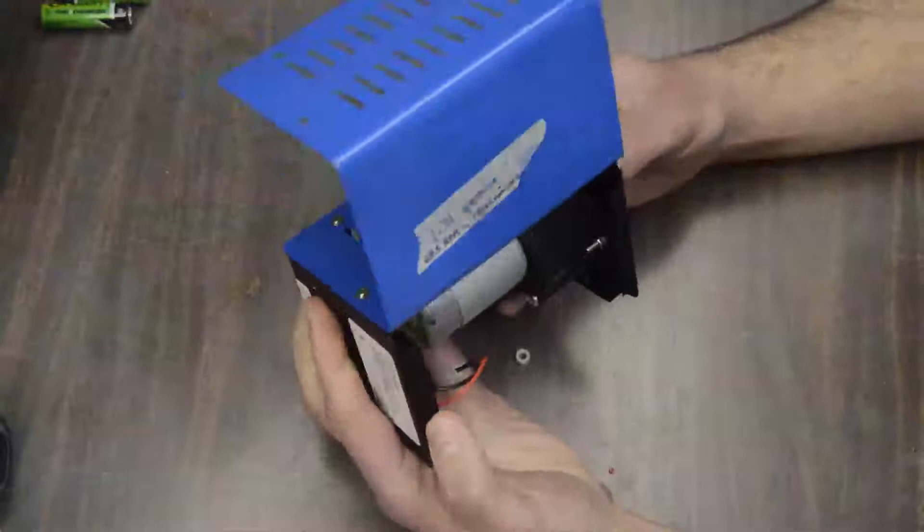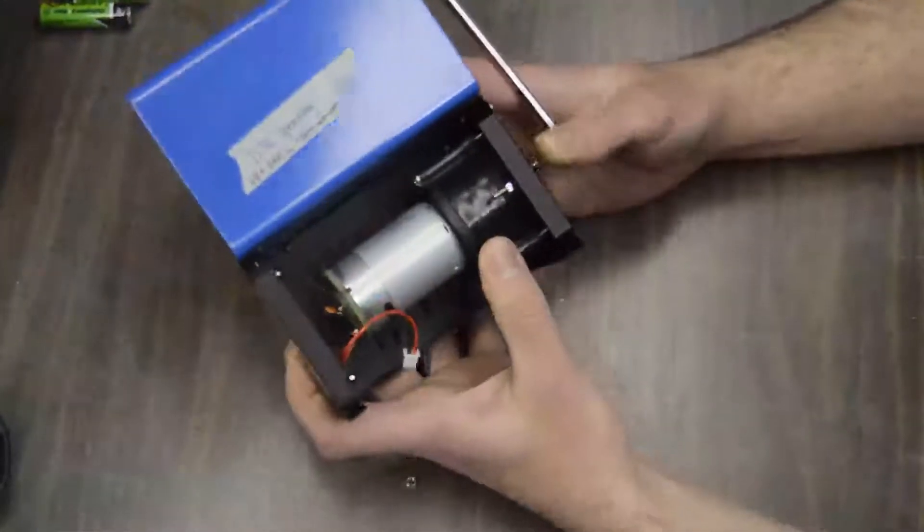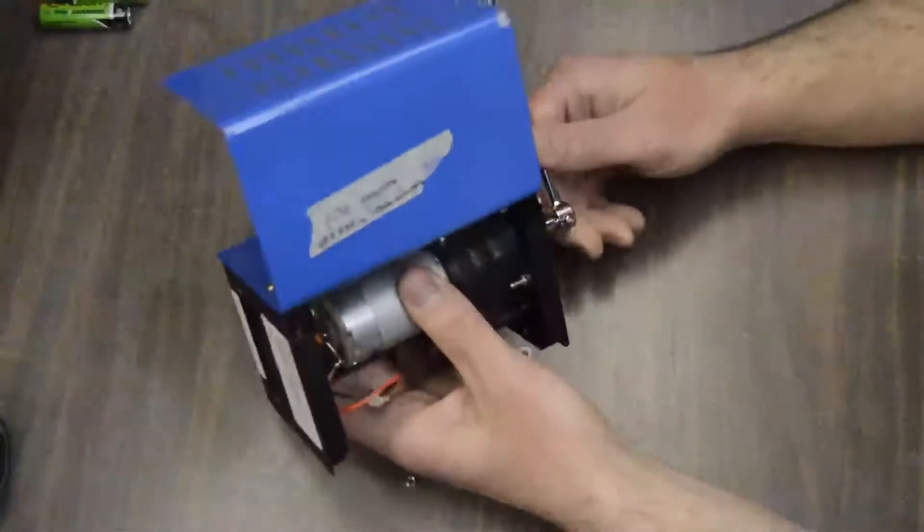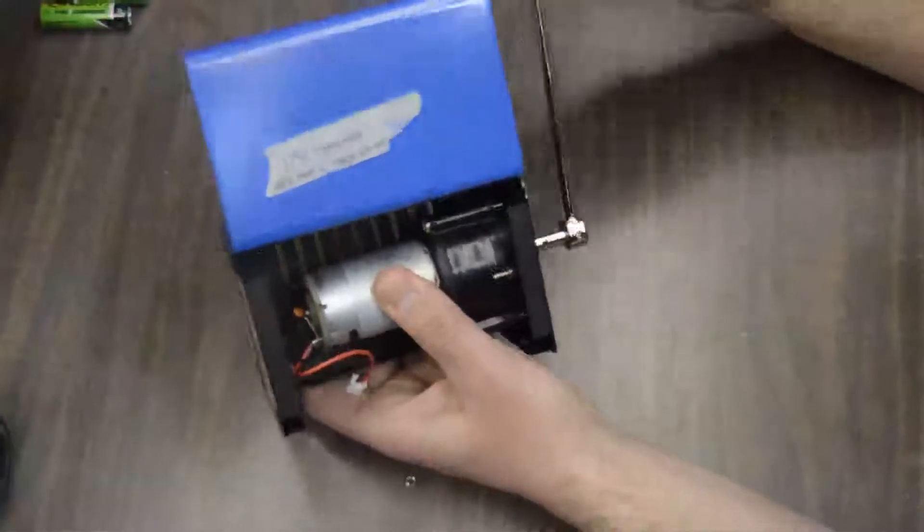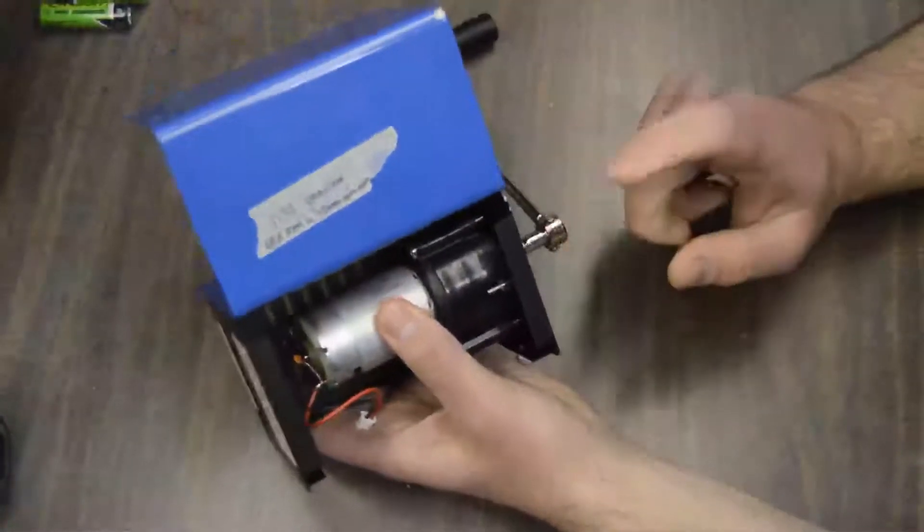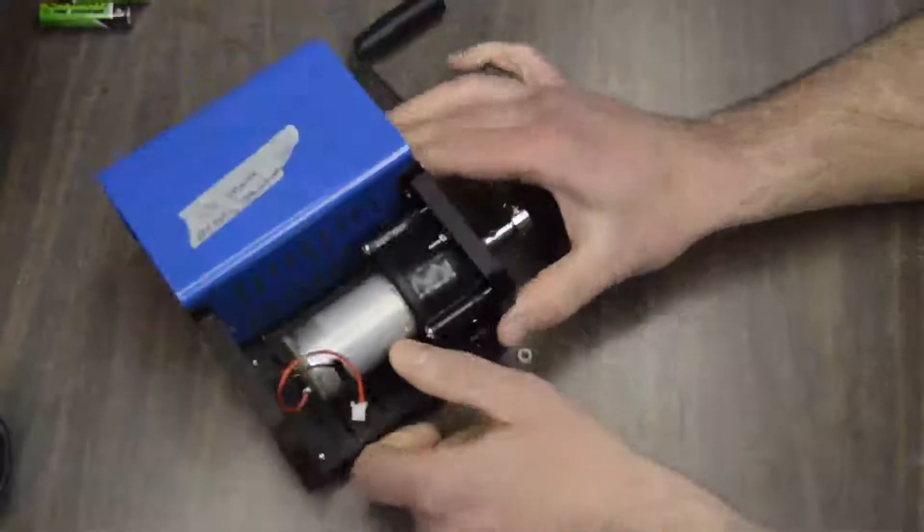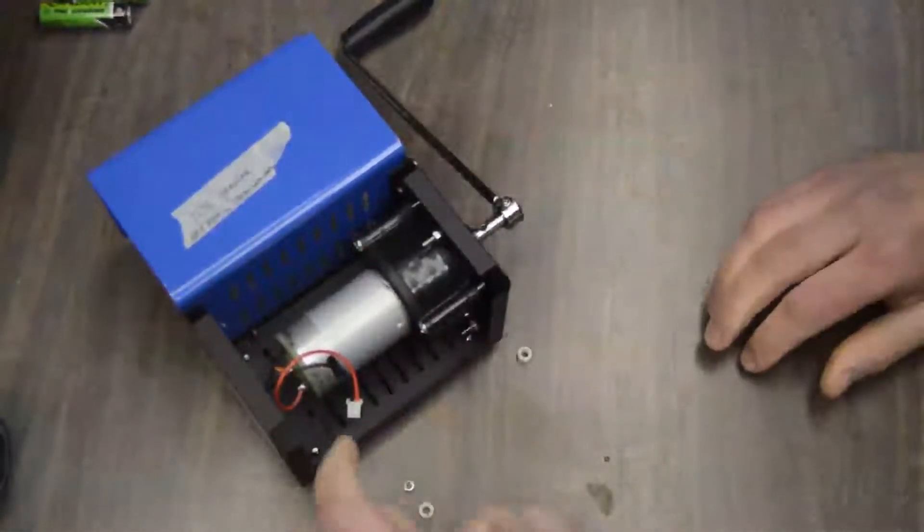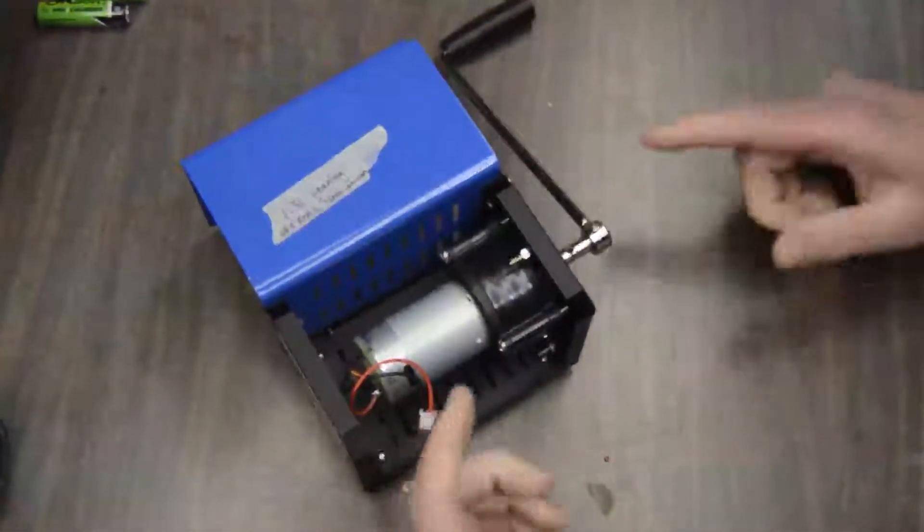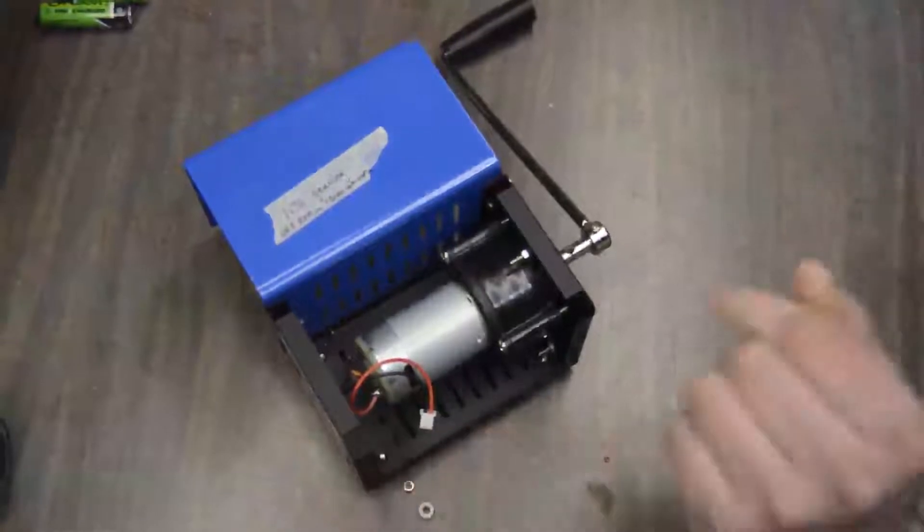So this motor connected through these planetary gears, the ratio on the gears is 31 to 1. So one turn of the handle gives you 31 revolutions of the motor shaft. I just verified that by putting a little mark on the end of the shaft and then turning the handle once and counting how many times that mark went around.